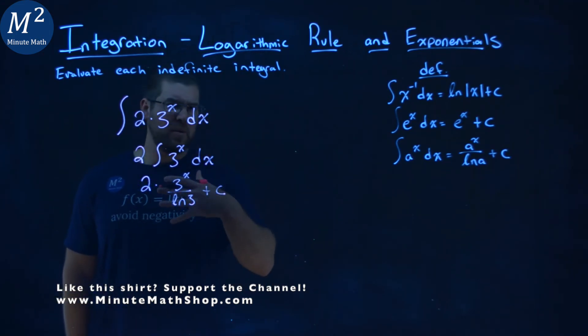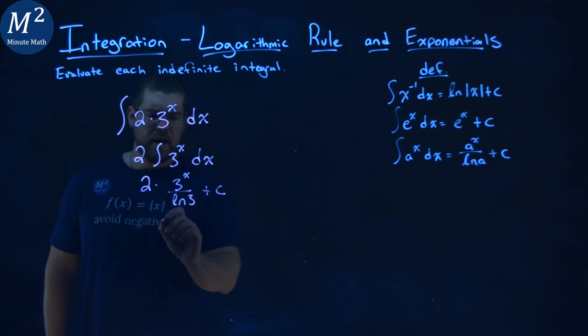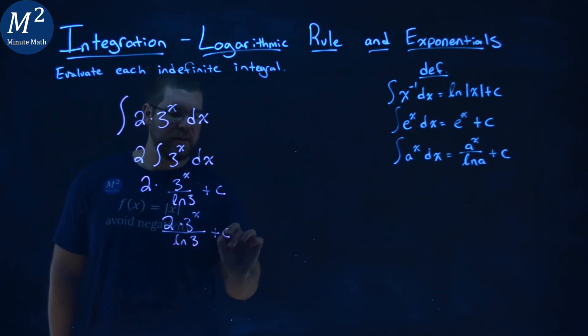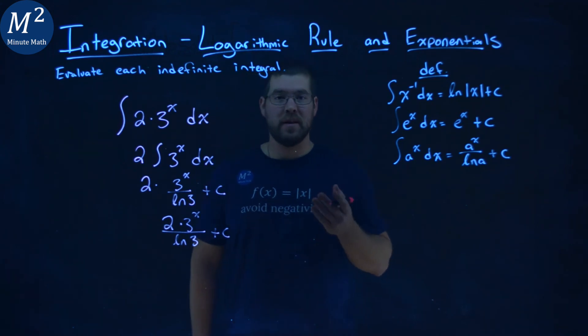Now, we can rewrite this to be one big fraction again. And so, we have 2 times 3 to the x power over natural log of 3 plus c. And that's it. That is our final answer.